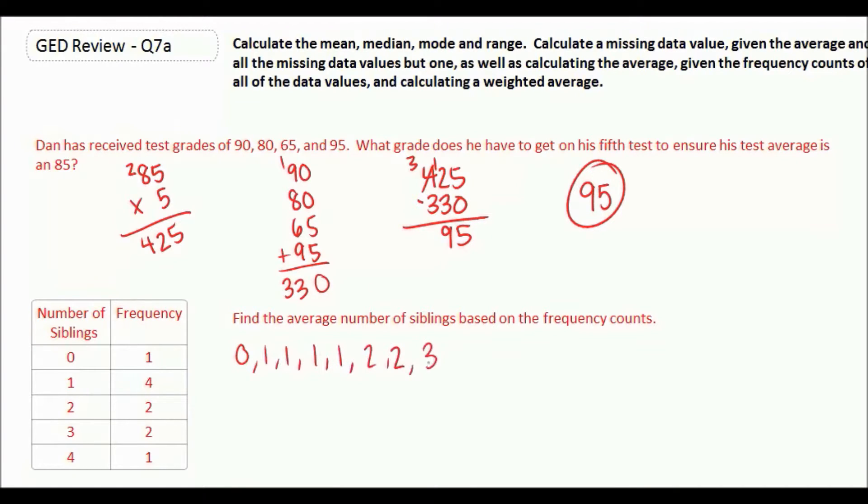The average means we're going to add them up and divide by 10, because there's 10 numbers. Right here is 4, plus another 4 is 8, plus 6 is 14, plus 4 is 18. So the sum is 18. We're going to divide that by 10, and the average is 1.8.